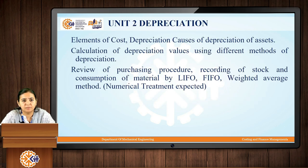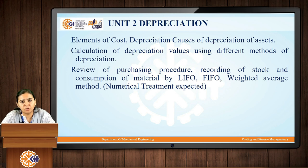Unit 2 is dedicated to the study of depreciation. Every asset is subjected to depreciation after a specific span of time, making it an important element of costing. We will study what depreciation is, its different causes, and how to calculate depreciation values using different methods. We will also review purchasing procedures — how material is purchased, how stock is recorded, and how material consumption is accounted for. Since materials enter an organization at different market rates, the material cost to consider is determined by LIFO, FIFO, and the weighted average method.